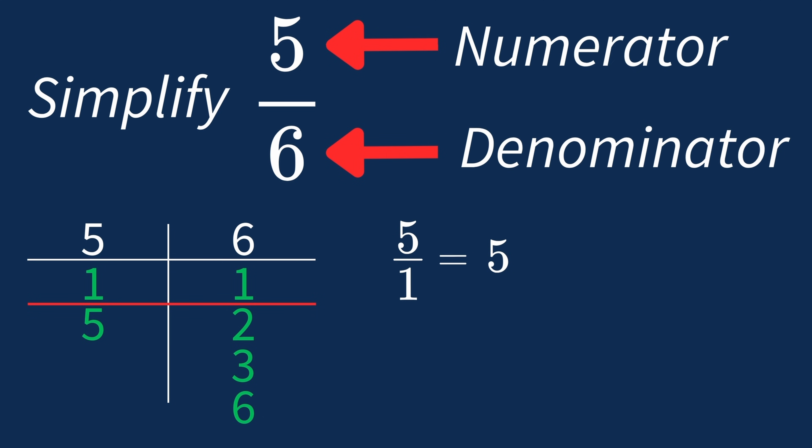And next, we take the denominator, 6, and divide it by 1, which leaves us with 6. So reassembling our fraction, we have 5 on the top and 6 on the bottom. We end up with the same fraction, 5 over 6. This shows us that 5 over 6 is already in its simplest form.